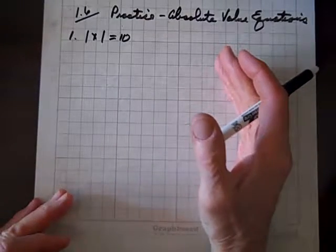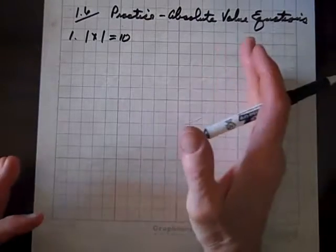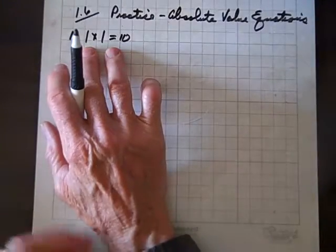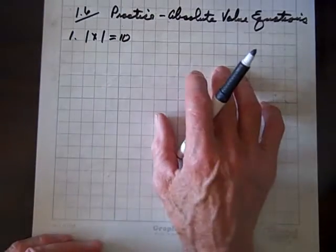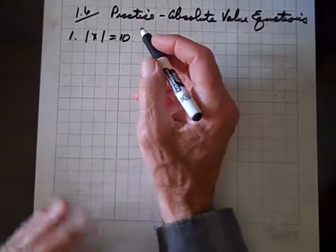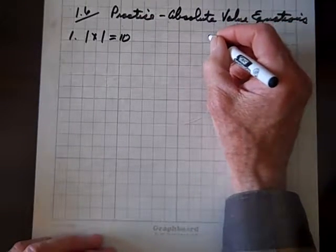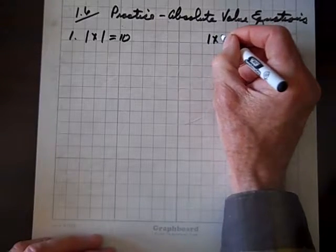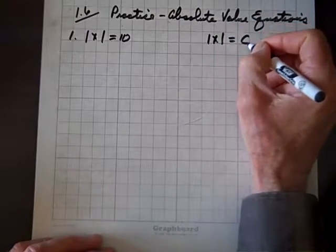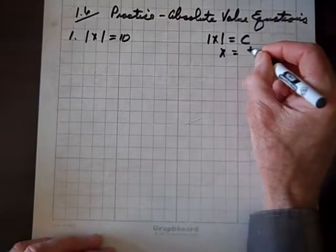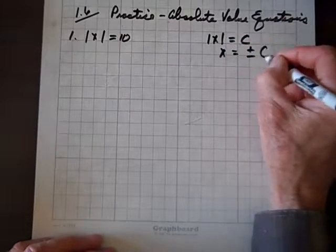Well, our first job is to get rid of these absolute value bars. Once we do that, we can isolate x. So in order to do that, you've got a rule that says if the absolute value of x equals c, then x equals plus or minus c.